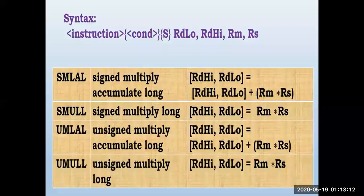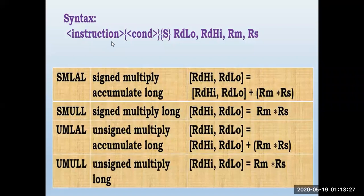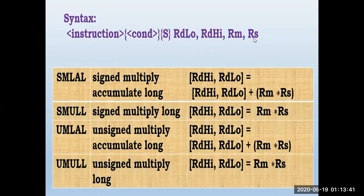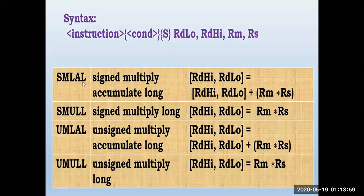There are also instructions for unsigned long multiplication and signed long multiplication. When multiplying two 32-bit numbers, you can get a 64-bit result. The syntax includes condition and S-bit fields. SMLAL stands for Signed Multiply and Accumulate Long — S for signed, MLA for multiply and accumulate, L for long.